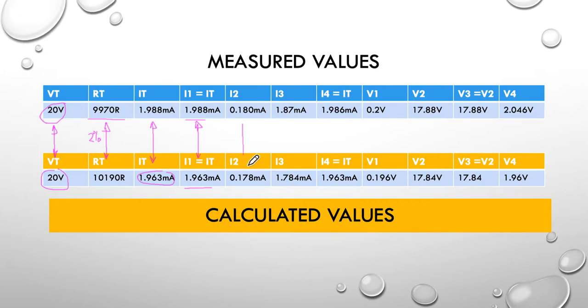Current two, I2 through the second resistor, measured at 0.18 but calculated at 0.178, within less than 1%. I3, we calculated 1.87 milliamps and measured 1.78, exactly spot on. The current through I4, which should be I total, we measured at 1.986 and calculated at 1.963, spot on. That's the end of our currents. All our currents are dealt with.